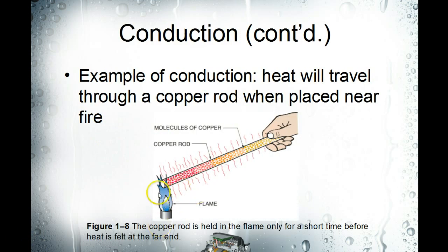So here's the example from our textbook. This is just a copper rod and it depicts the flame transferring the energy to the molecules of the copper rod. And then they start to bounce faster and faster as they move up the rod. And eventually those rapidly moving molecules are going to bounce up against the molecules in your fingers and start to warm up your hand.